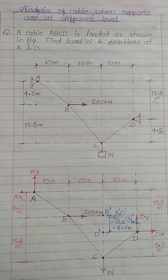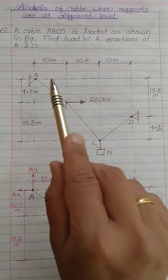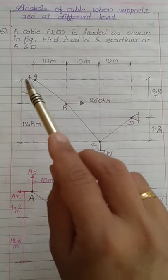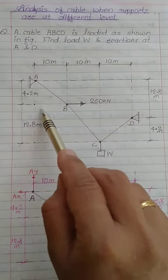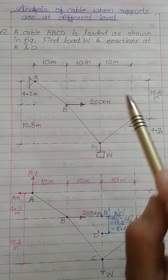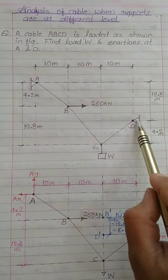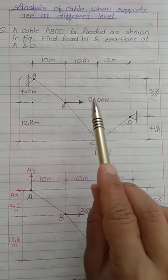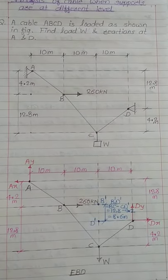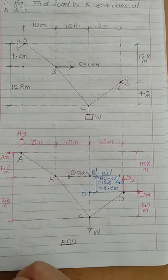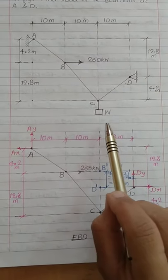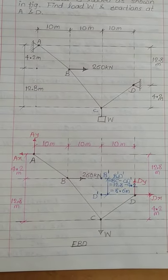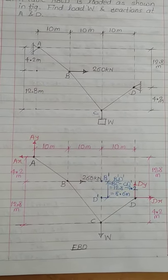If you observe the figure, the horizontal distances between AB, BC, and CD are given. Similarly, the vertical distances between AB, BC, and CD, and the distance between D and A, are also given. At point B there is a horizontal force of magnitude 260 kN, and at point C there is unknown weight W. We will solve this problem by drawing a free body diagram.